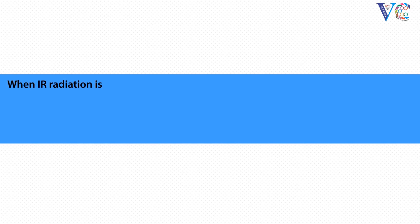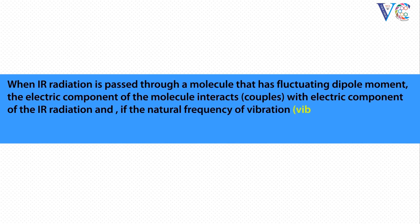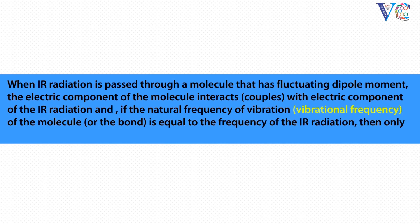When IR radiation is passed through a molecule that has fluctuating dipole moment, the electric component of the molecule interacts and couples with the electric component of the IR radiation. If the natural frequency of vibration of the molecule or the bond is equal to the frequency of the IR radiation, then only the absorption of IR radiation takes place.